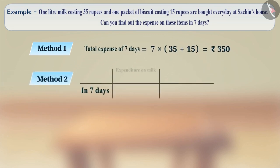Method 2: First, we will find the amount spent on milk in 7 days, which will be 7 into 35. Similarly, we will find the amount spent on the packet of biscuits in 7 days, which will be 7 into 15.